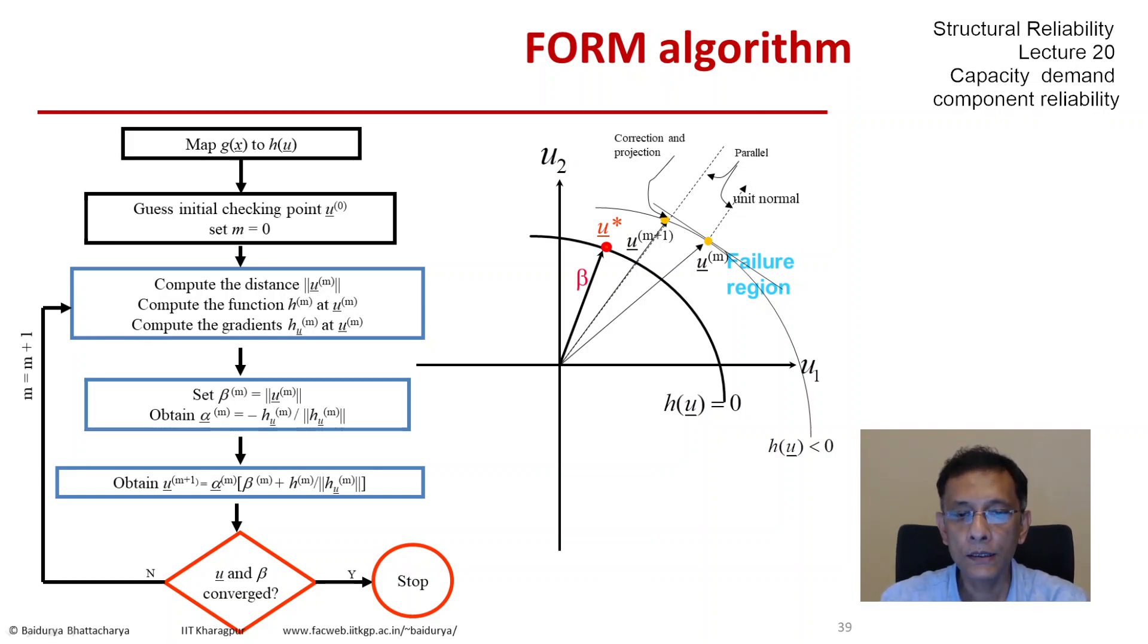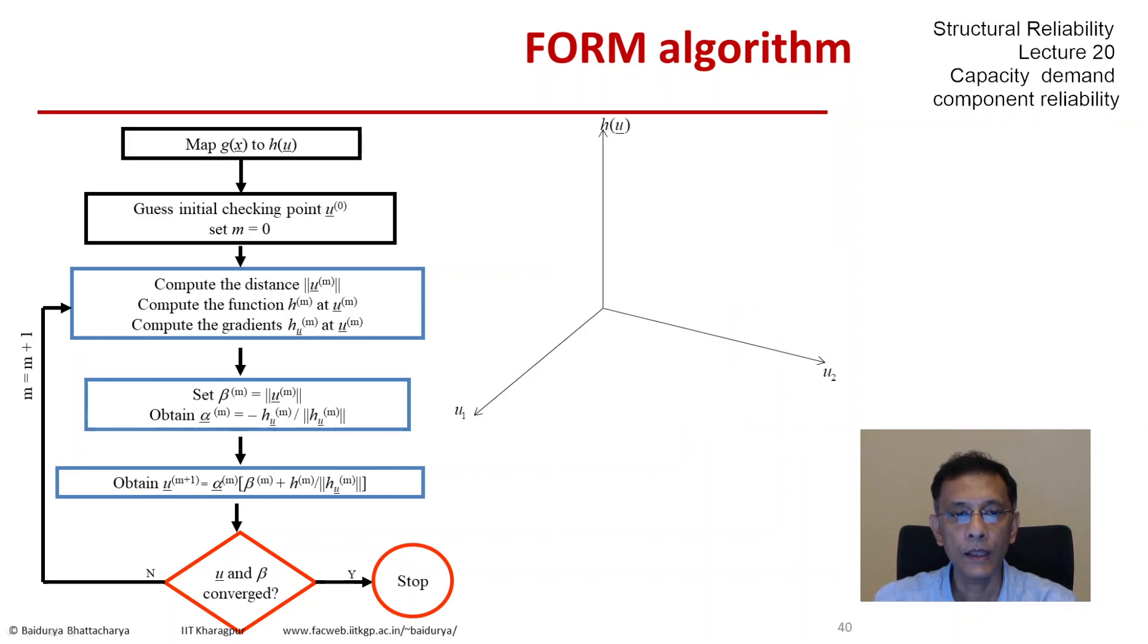Now let us probe a little deeper as to how this works. Let's see how we get these alphas and the partials of h with respect to u, and why we need to normalize h_u. Let's look at a three-dimensional plot: u1 and u2 as we had before, and the third dimension is the functional value. Above the u1-u2 plane it is positive, and below it is negative, which we identify as failure. This h surface, wherever it cuts the u1-u2 plane, is actually my limit state equation—the line separating the safe from the failed domains.